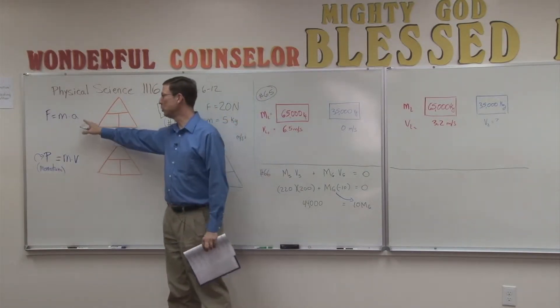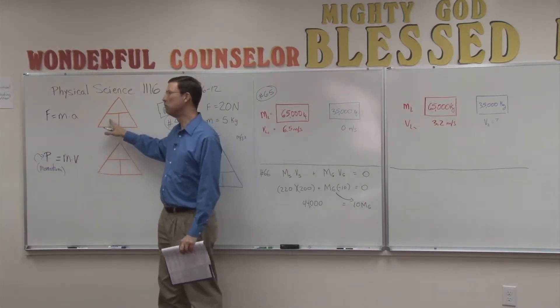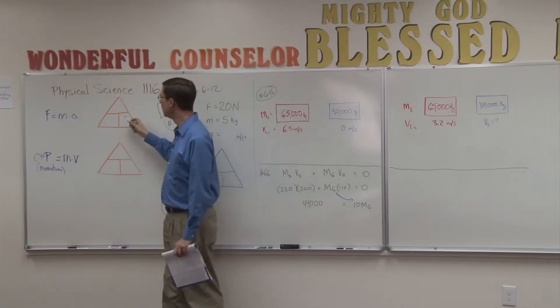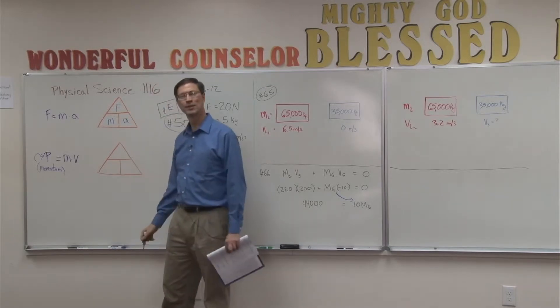Remember, there's two things being multiplied together. When we see a formula written this way, the two things being multiplied together would both go on the bottom. So I'm going to put M here, acceleration here, and the force goes on the top.